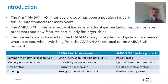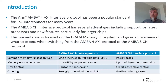Many of you will be familiar with the AMBA 4 AXI interface protocol — it's been super popular for many years. What AMBA 5 CHI tries to do is give a lot of advantages to support the latest processors, especially for multiprocessor systems, with new features for much larger chips. Today's presentation is focused on the DRAM memory subsystem and what you need to know when switching from AMBA 4 AXI to AMBA 5 CHI protocol.